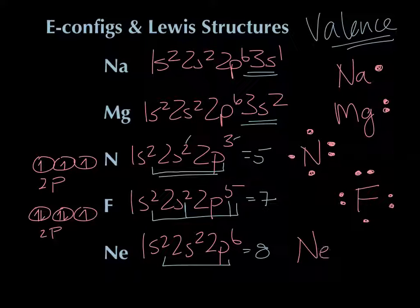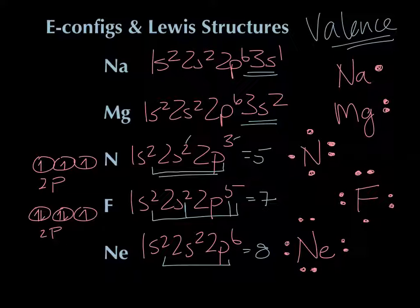For neon, it has 2s² and then p1 through p6, so all four pairs of electrons are all the way around. Lewis structures always have the symbol for the element in the middle. The s electrons always go in the three o'clock position, and then the p electrons go around the other corners. You draw them paired or unpaired depending on how many there are.